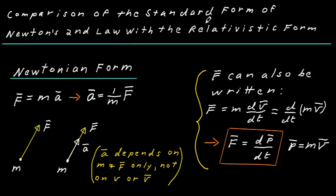I would like to compare the standard form of Newton's second law with the relativistic form. Here's the standard form: F equals ma. We can solve this for a by multiplying both sides by 1 over m, giving a equals 1 over m times F. This tells you that if you have a mass m with a force F acting on it, you get an acceleration in the same direction as the force, scaled by 1 over m. Importantly, a only depends on m and F — there is no dependence on speed or velocity, so a is independent of the state of motion of the particle.